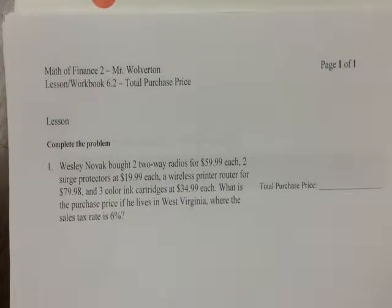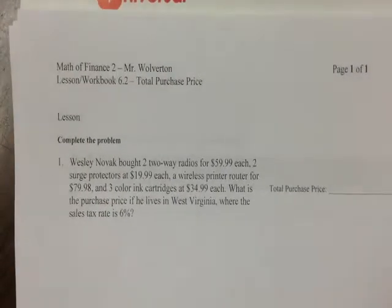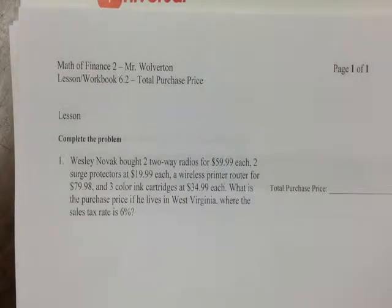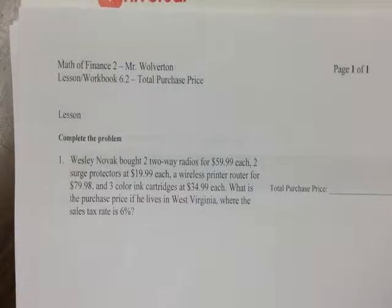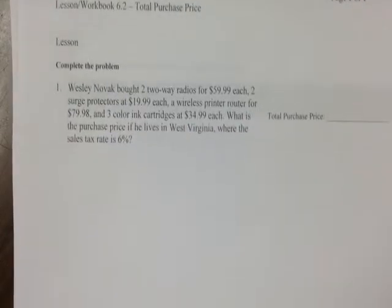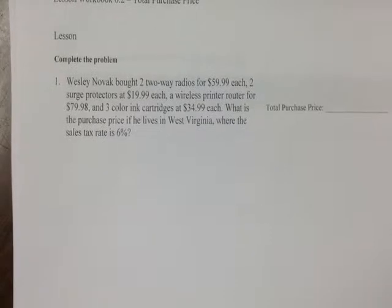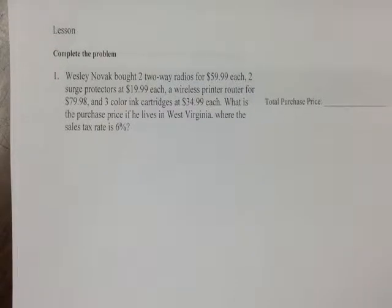Now we're talking total purchase price, section 6.2. Remember, total purchase price includes the purchase itself plus any sales tax, all included together. So first off, we've got to figure out how much we're buying. Let's read the question and figure out what we need.